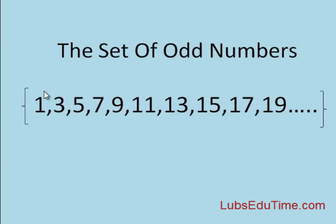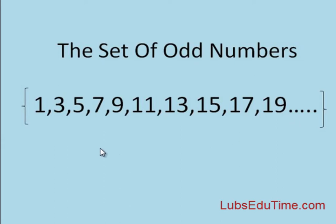The set of odd numbers, like the numbers that we have here: you have 1, 3, 5, 7, 9, 11, 13, 15, 17, 19 and so on. These numbers are odd numbers.